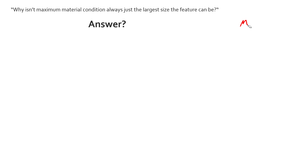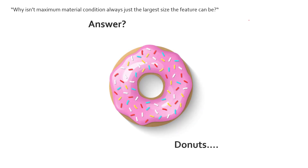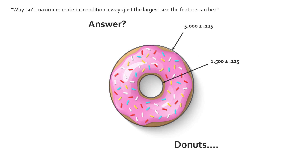The answer is always: think donut. I love a good donut, and it's an easy way to picture MMC for internal and external features. For external features like the outside of a donut, or for internal features like the inside of a donut, we have an easy way to remember what the MMC is.